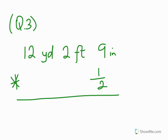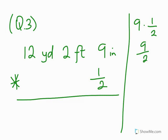We start with the least unit on the right, which is inches. 9 inches times one-half gives us 9 over 2, which is 4 and a half. Then we ask ourselves: what is the relationship between inches and feet? 12 inches make one foot. 4 and a half inches is less than 12 inches, so we are good.